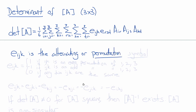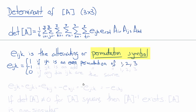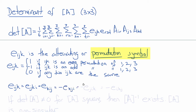The permutation symbol EIJK is mostly zero except for special combinations of I, J, and K. If I, J, K are all different and form an even permutation of 1, 2, 3 — that is, 1,2,3 or cycling: 2,3,1 or 3,1,2 — then EIJK equals plus 1. If it is an odd permutation of 1, 2, 3 — such as 3,2,1 — then EIJK equals negative 1. Any other values where two indices are the same give 0. So EIJK equals EJKI equals EKIJ (cyclic positive permutations), and equals negative EKJI, negative EJIK, and negative EIKJ.